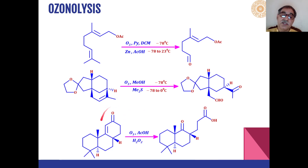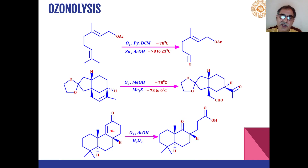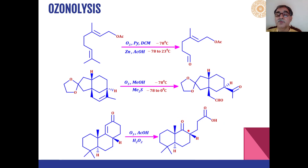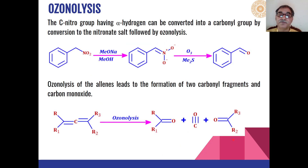For an alpha-beta unsaturated ketone, breaking of the carbon-carbon double bond creates a keto group at one position, while because hydrogen peroxide is being used for oxidative workup, the other fragment gives a carboxylic acid. So the two products are a carboxylic acid and a keto group.